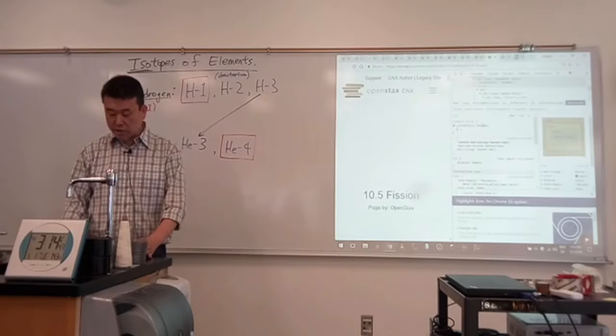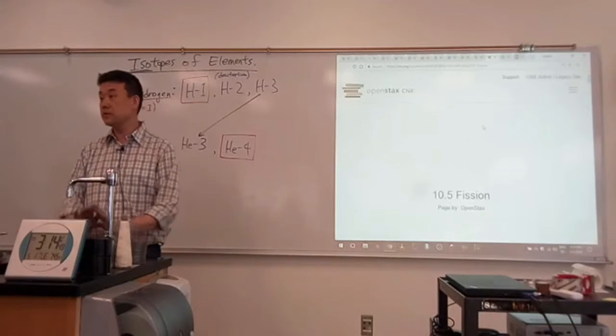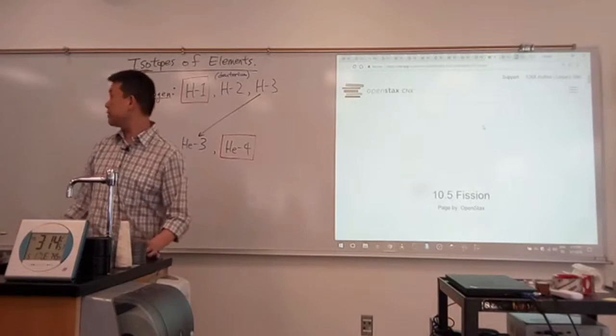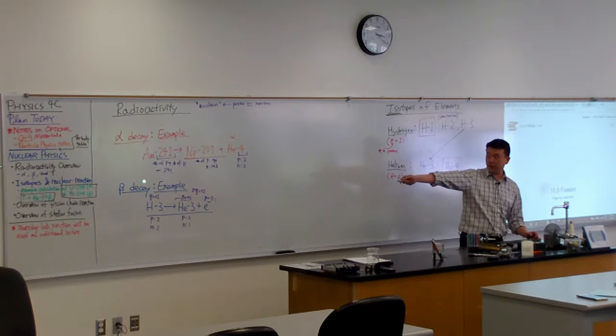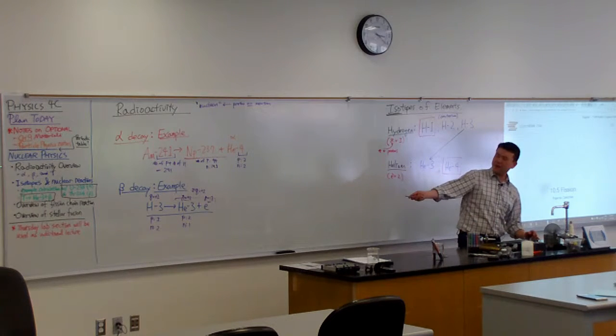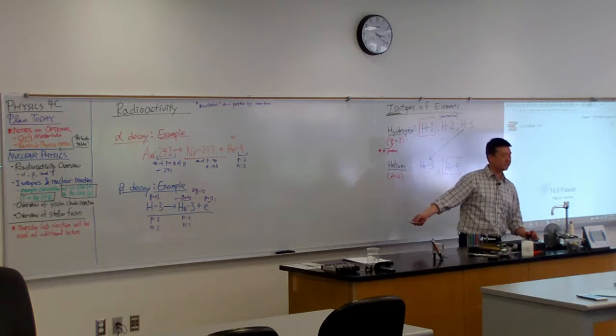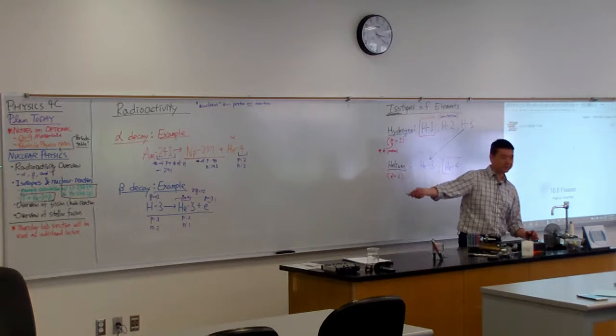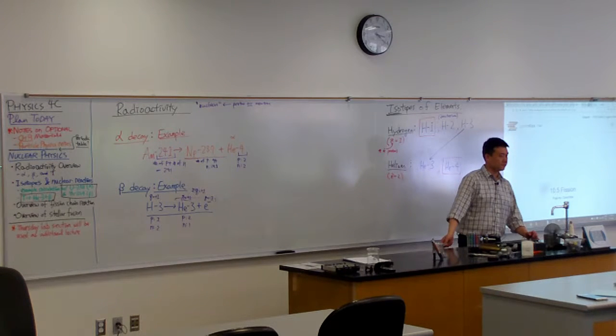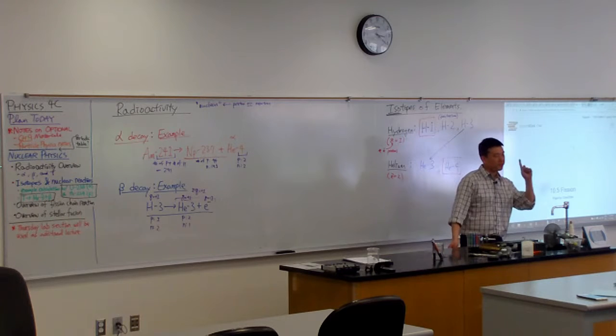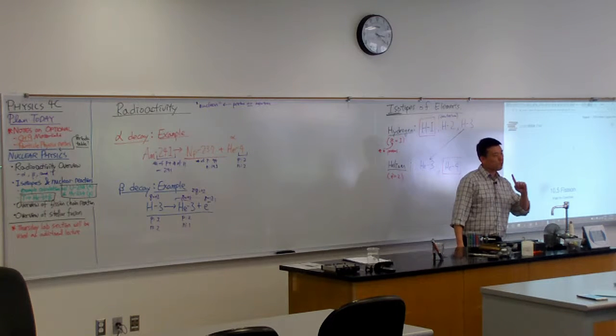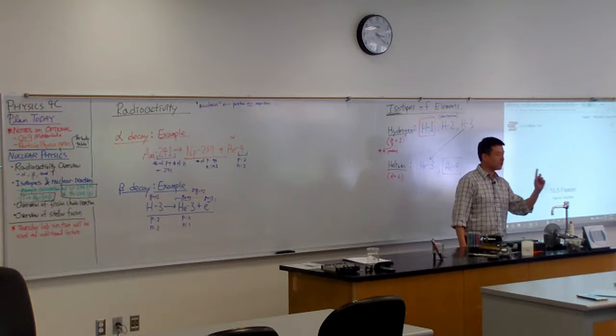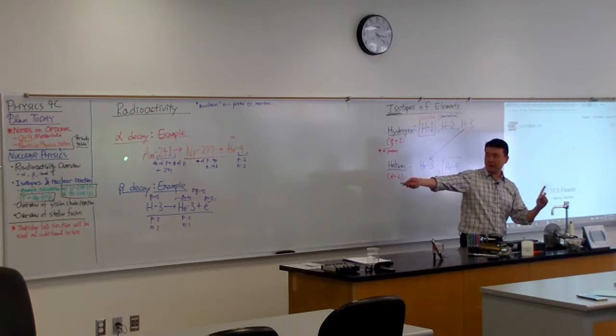So most naturally occurring isotopes, if you simply leave it out there, they're going to decay by alpha or beta decay. But why am I not listing gamma decay here? Like, why no gamma rays? What makes one thing, what's one distinct characteristic of gamma ray that's different from alpha or beta ray?